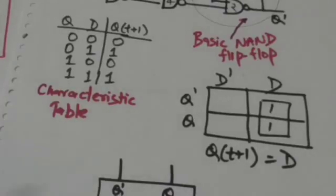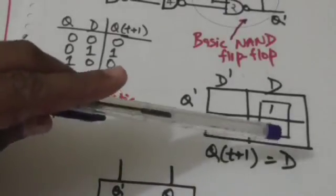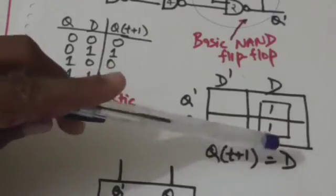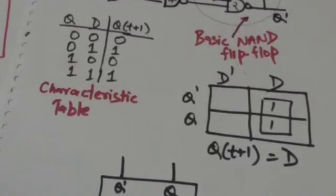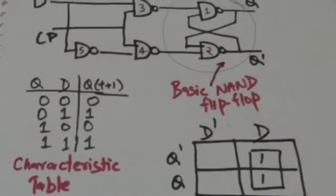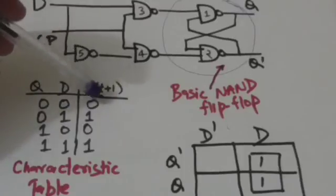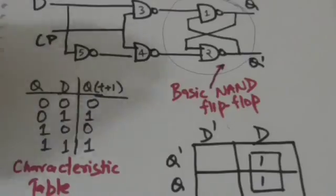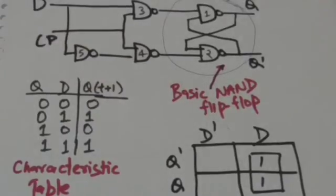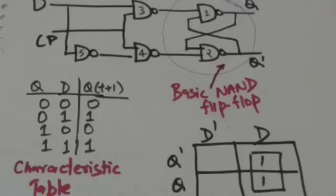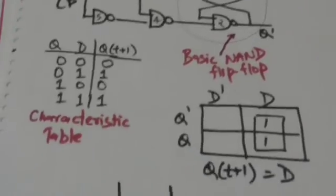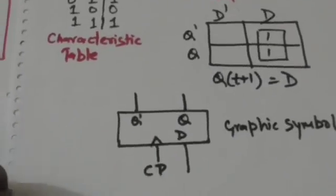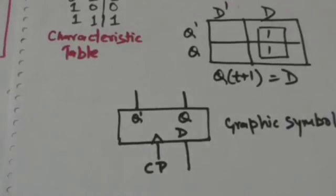Notice that the next state of the flip-flop is the same as the value of D — it is independent of the present state. When D equals zero, the next state will be zero. When D equals one, the next state will be one. This is the graphic symbol of the D flip-flop.